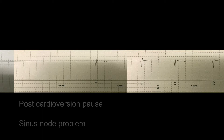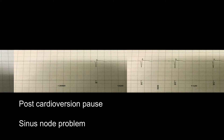Postcardioversion pauses are caused by sinus node disease or a sinus node problem, and as noted in the tutorial, this is generally benign and safe. However, it is very likely that this patient is symptomatic — hence they have a loop recorder — so they may require therapy in the form of a pacemaker. Alternatively, treating the atrial fibrillation aggressively with medication or ablation to maintain sinus rhythm can prevent cardioversions and potentially avoid the need for a pacemaker.